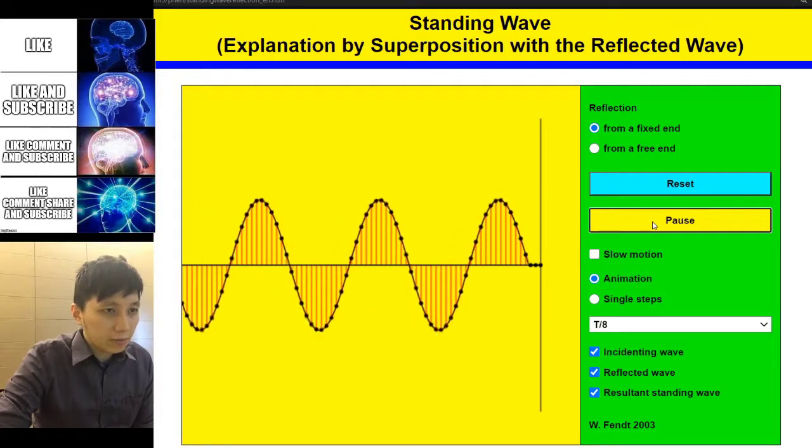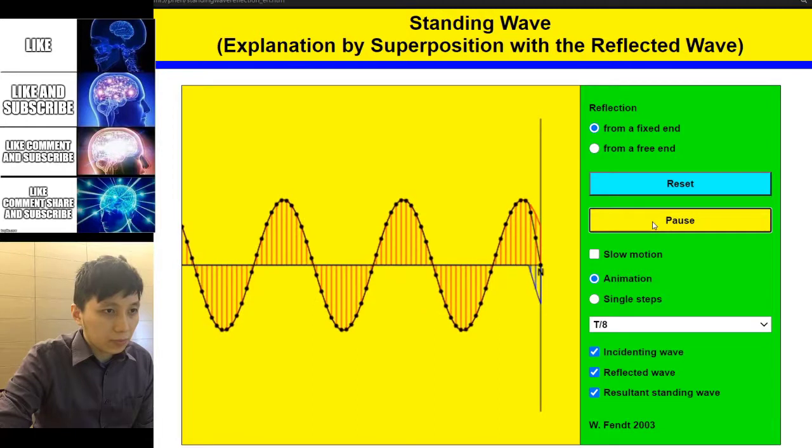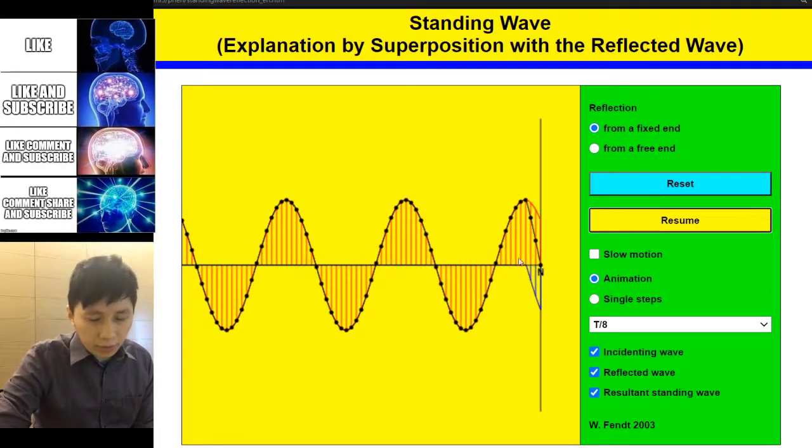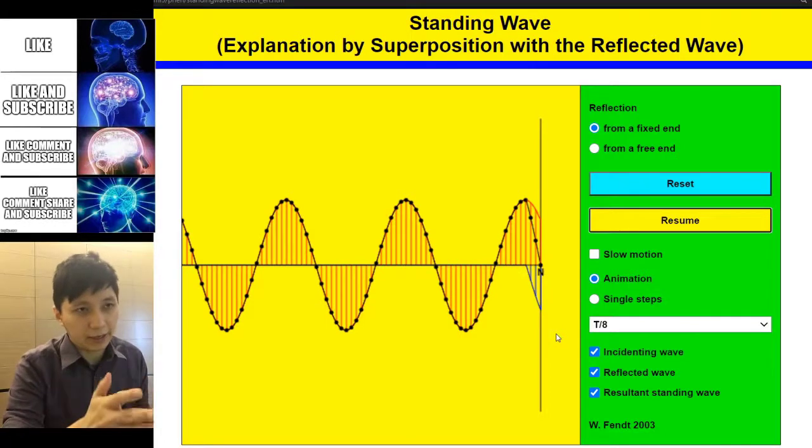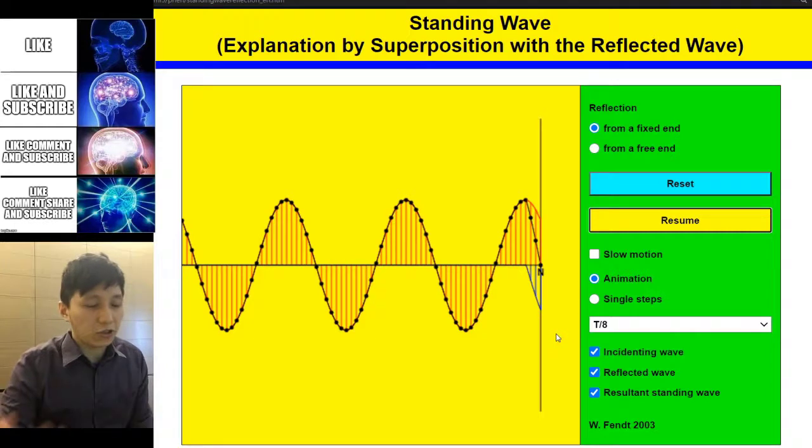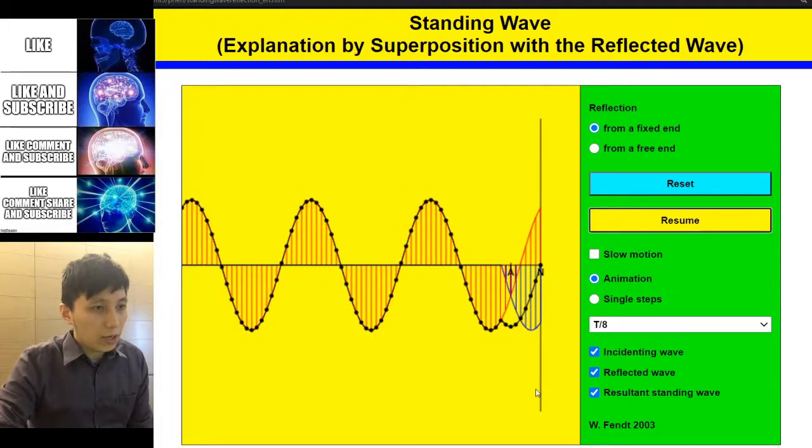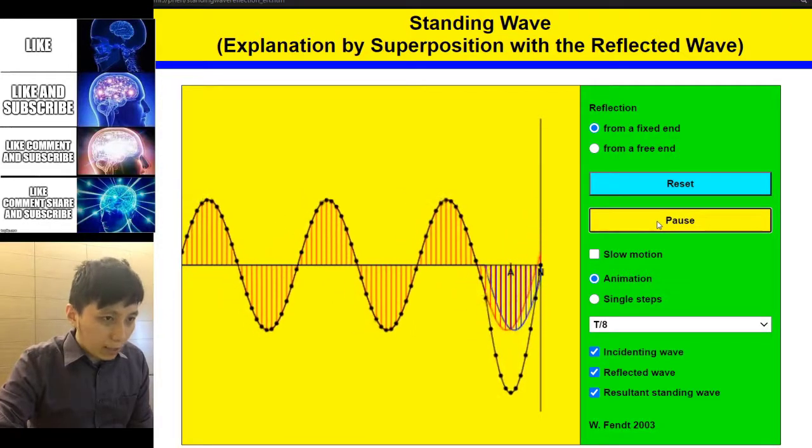And obviously when we set the reflection to be fixed, and the blue one at the bottom you can see here will have a phase change of 180 degrees, that is pi of phase change because of fixed end. For free end you can also try that; there will be no fixed phase change. However, you still can form a standing wave.